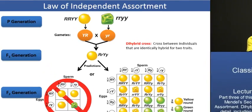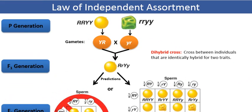A dihybrid cross is a cross that involves two pure lines, or two true breeding varieties — two pure breeding pea plant varieties in this case. These varieties differ in two characters of interest that we are looking at.